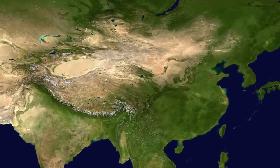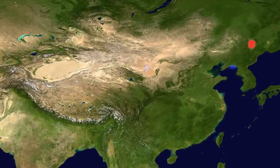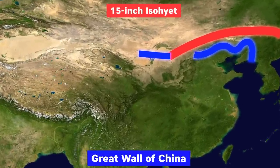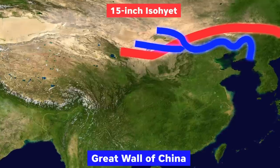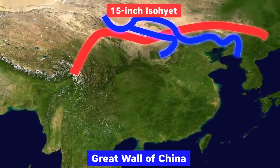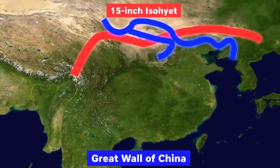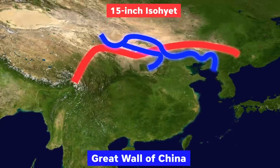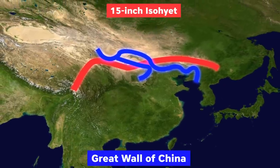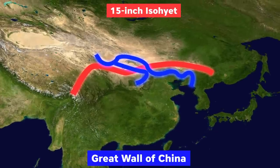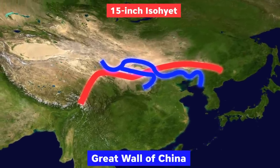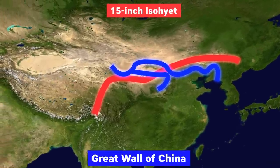It's not a coincidence that the Great Wall parallels the Isohyet — it was only fortifying what nature had created. The core can definitely project power and influence beyond the Isohyet, but for Chinese civilization to take root, to settle in the form of people and cities beyond this line, that's a real challenge.